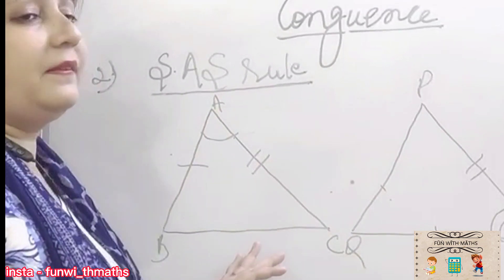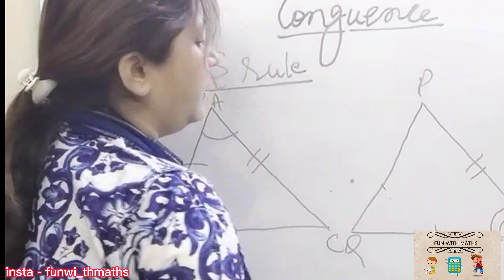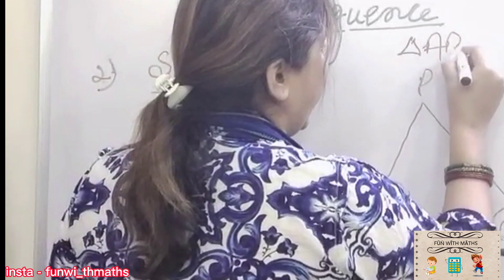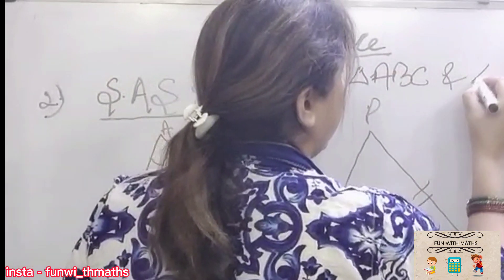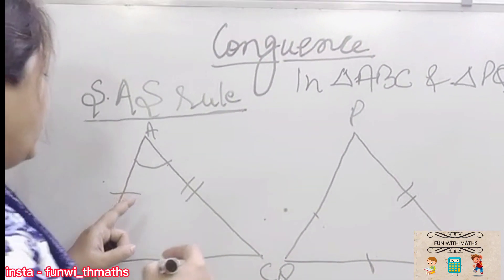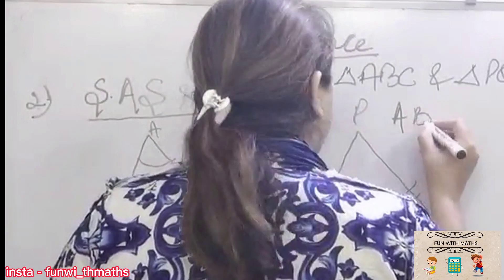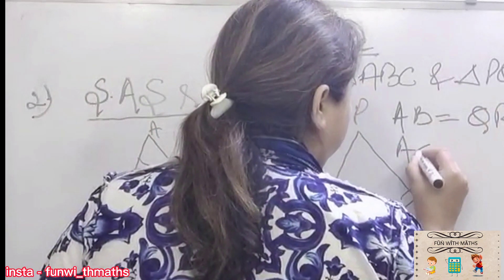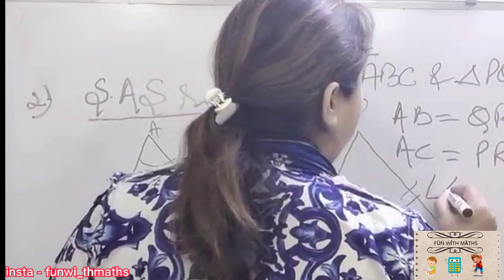Now according to SAS criteria, I have drawn two triangles. I have marked one cut sides, double cut and angle between them. So if I write triangle ABC congruent to triangle PQR. Suppose you have to prove them congruent by using SAS. So what things you will write? First you write single cut side, that is AB equals to QR. Then AC equals to PR. And angle A equals to angle P.